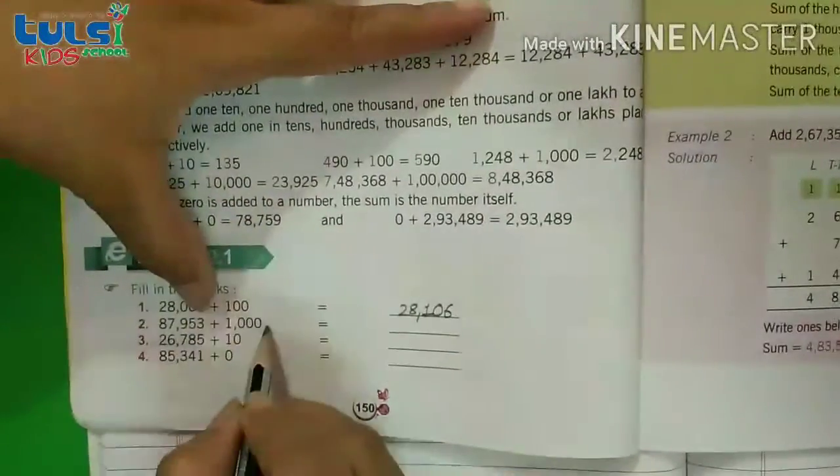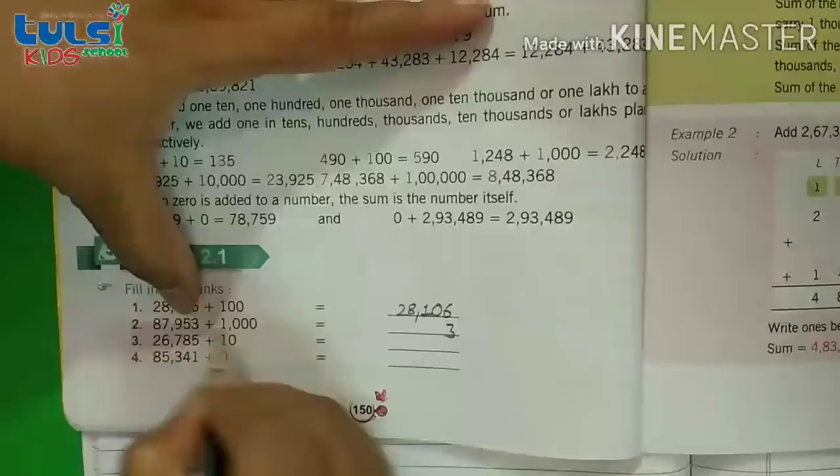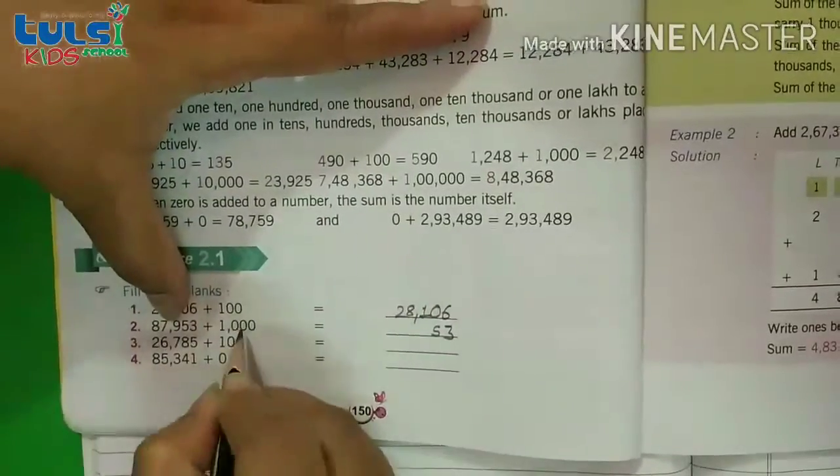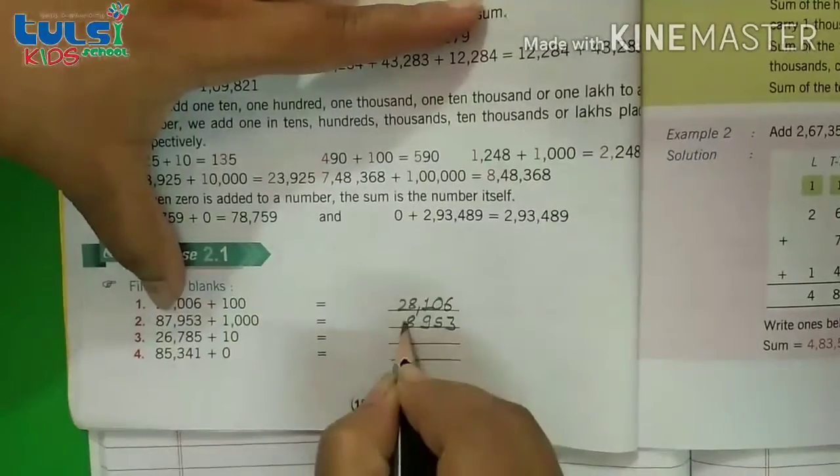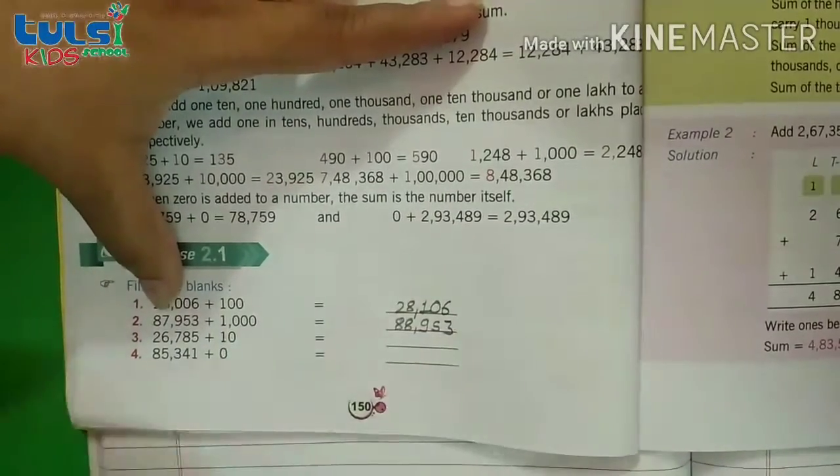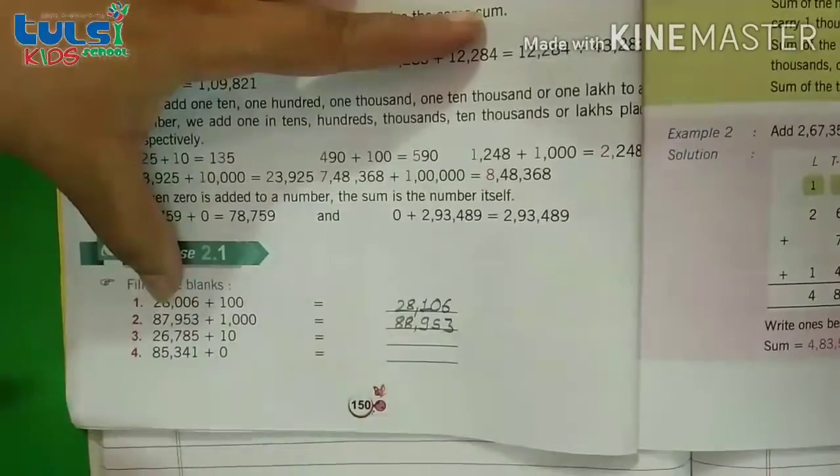Now we will move with the next question. 3 plus 0 is 3, 5 plus 0 is 5, 9 plus 0 is 9, 7 plus 1 is 8. And 8 waapas hai jaisi. Toh is tarikhe se 88953 will be the answer.